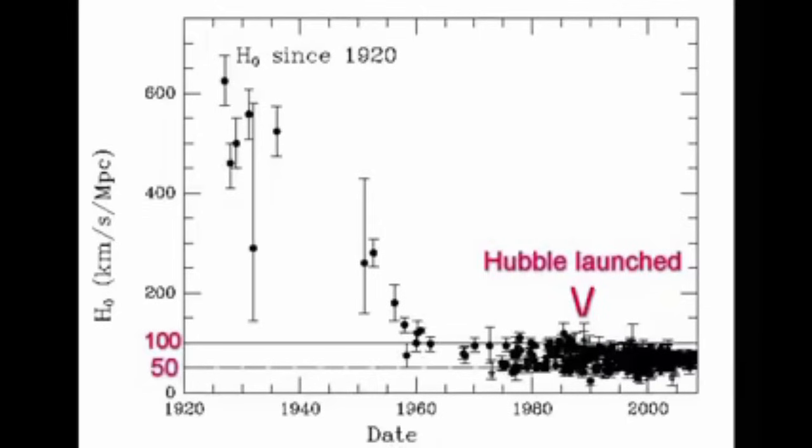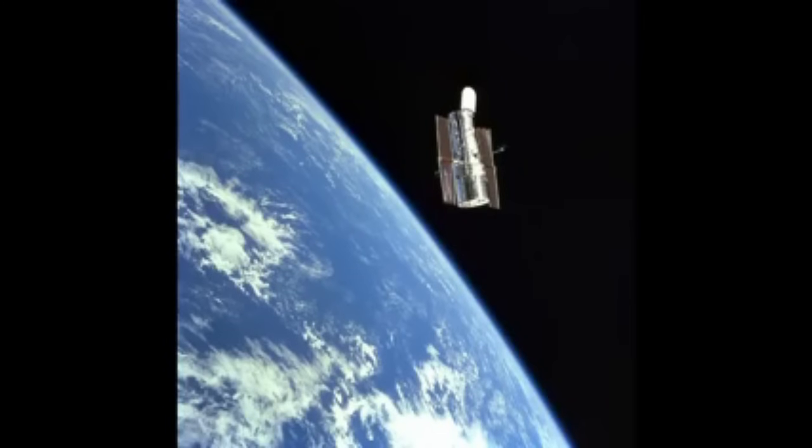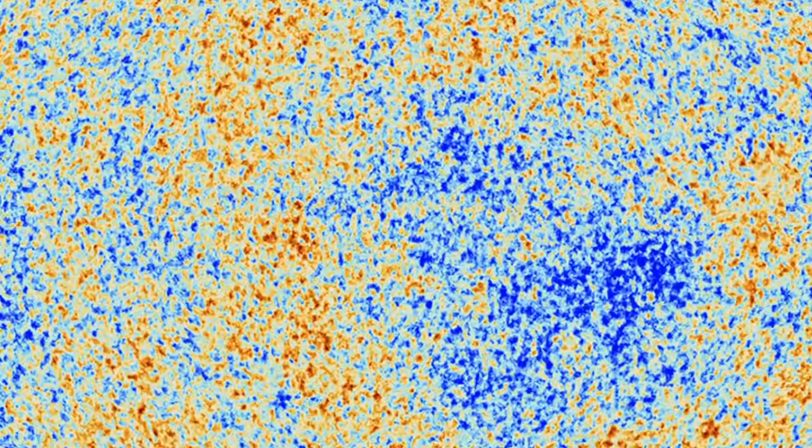By 2019, the time of my last video on this subject, the best measurement the distance ladder had attained for the age of the universe, using the Hubble Space Telescope, was 13.8 billion years. But the 21st century saw the arrival of a means to check that number.